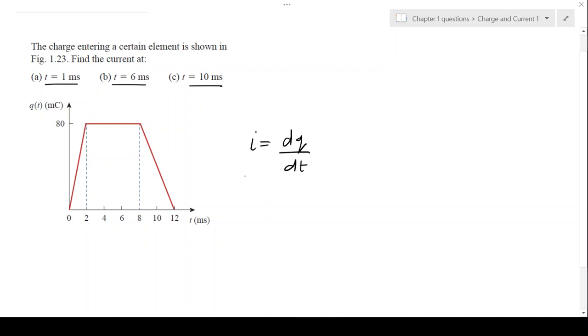What will the current be at 1 millisecond? At this point, it must be the rate of change of charge between 0 and 2 milliseconds with respect to time. The reason I mention this range is that this is a linear graph, a straight line. The rate of change of charge with respect to time is the gradient of this graph.